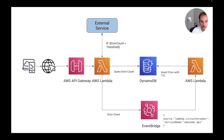Here's how it works. When we reach a certain number of failures for a particular service — and I can do this for each service our Lambda calls — I add an item in DynamoDB. If the count of errors is greater than a threshold we set, the Lambda function stops calling the external service and replies with an error. In this way, we avoid wasting time waiting for the external service and save execution time.